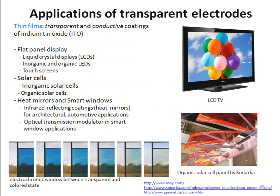The first application I want to talk about is transparent electrodes. Transparent electrodes are always needed when you want to apply voltage to a device and you want light to either come out or go into the device — for example in a display or an OLED, where you apply voltage and want the light to come out, so one electrode has to be transparent. Also in solar cells you need transparent electrodes.